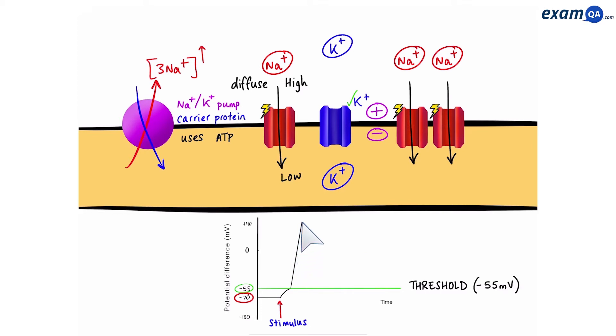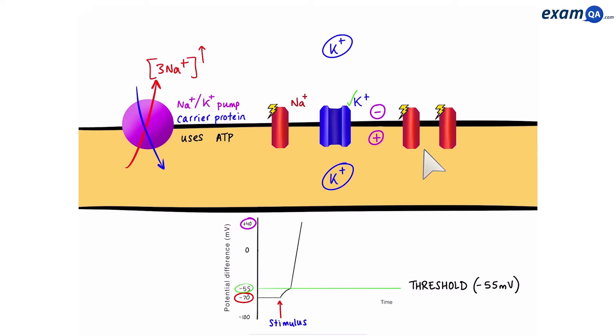Now, we can say that the inside of the neuron has become more positive than the outside. Next, those sodium channels will spontaneously close, and then potassium channels will open up.